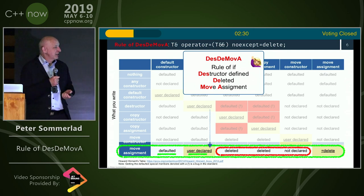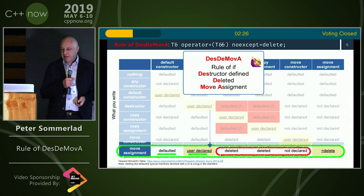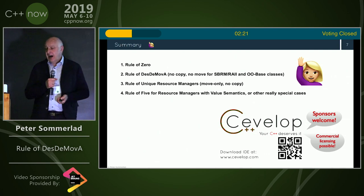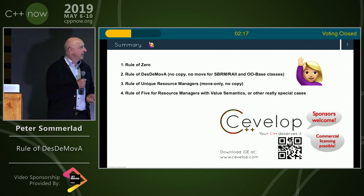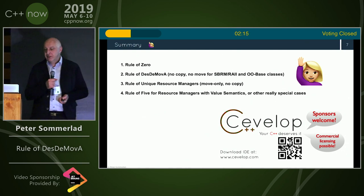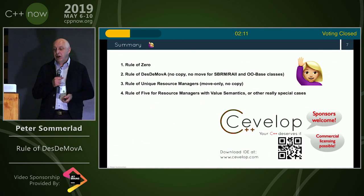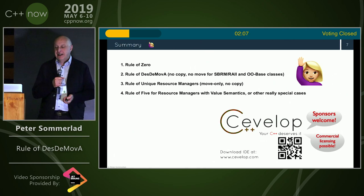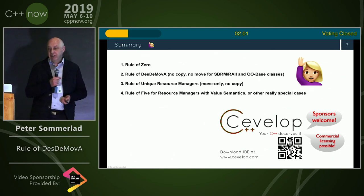The exceptions where you actually move and copy — see tomorrow. So remember: rule of zero rules; the Rule of Desta Mova for RAII (or better named SBRM) classes and OO base classes; the rule of unique resource managers (move-only, no copy); and then the rule of five for cases where you want value semantics again after introducing things that break the rule of zero.